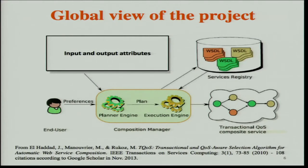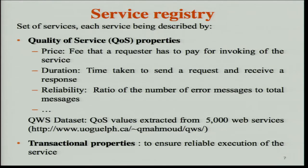This service composition has two particular properties. It is transactional — meaning we ensure that all the component services will be executed or none of them. And the resulting composite service also optimizes the quality of service. We suppose we have a service registry with services described by two kinds of properties: quality of service properties, which can include the price to invoke the service, the duration of the service, its reliability, and so on.